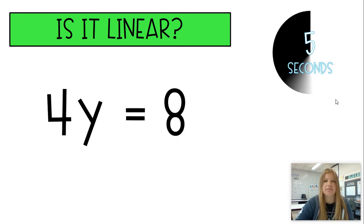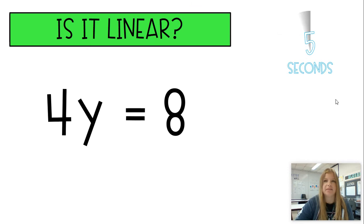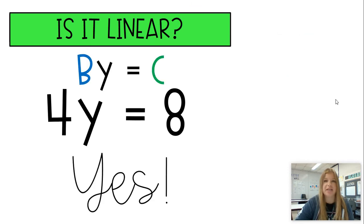4Y equals 8. Is it linear? The answer here is definitely yes. And remember, A can be 0. If you have an A value that's 0, you don't even see the AX anymore. You just see BY equals C. Remember, BY equals C is definitely a linear equation. Here, my B is 4, and my C is 8.